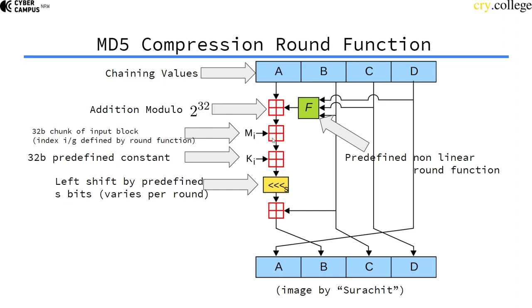Then a 32-bit value of a predefined constant that is in the MD5 standard is added to it, and then it's left-shifted by s bits where s is also predefined in the MD5 standard and varies per round.